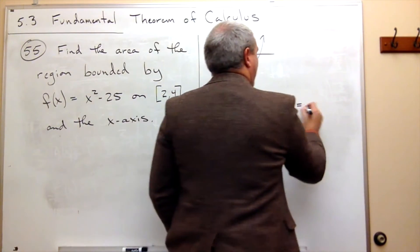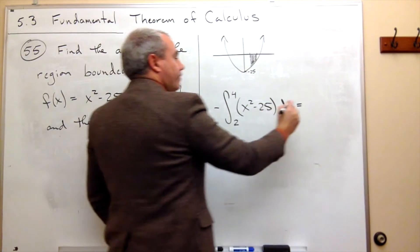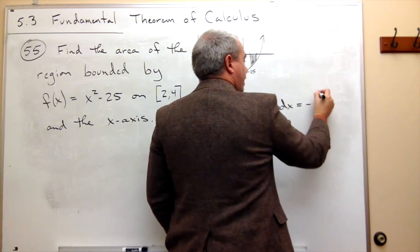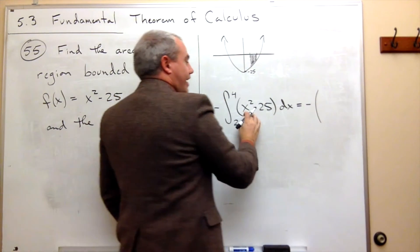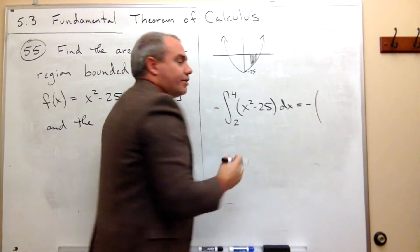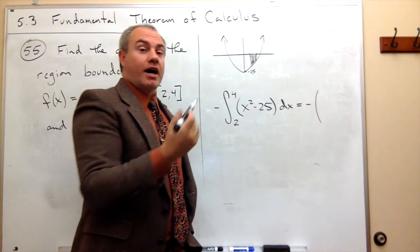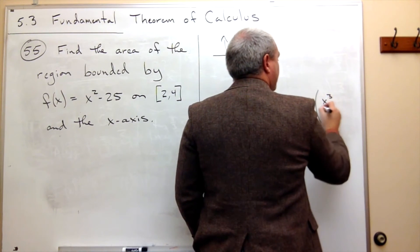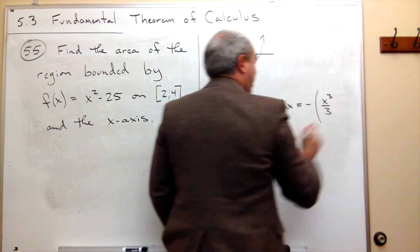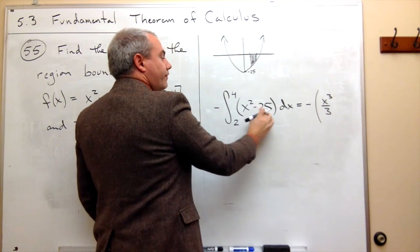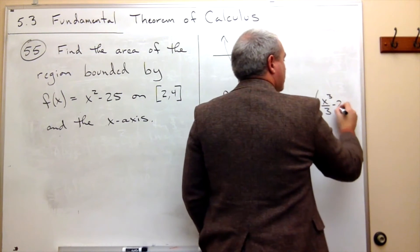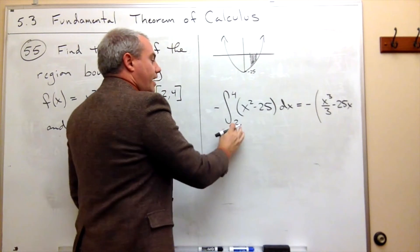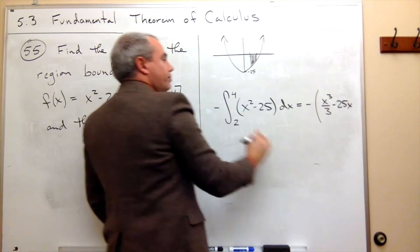First of all, I need to take an antiderivative. That negative is still around, so let's just leave the negative. The antiderivative of x squared — I use the reverse power rule — and I get that that would be x cubed over 3. The antiderivative of negative 25 is minus 25x, and then I want to evaluate that from 2 to 4.